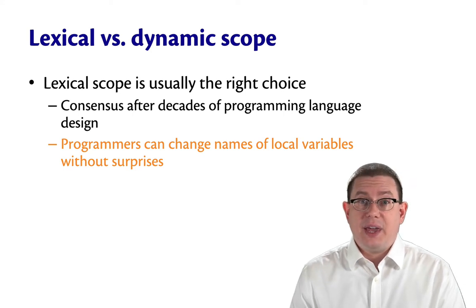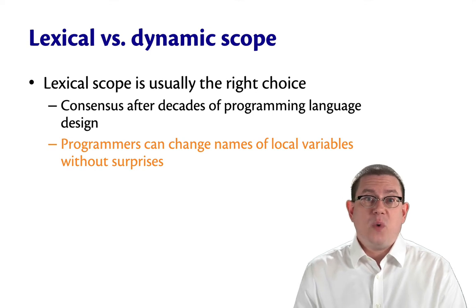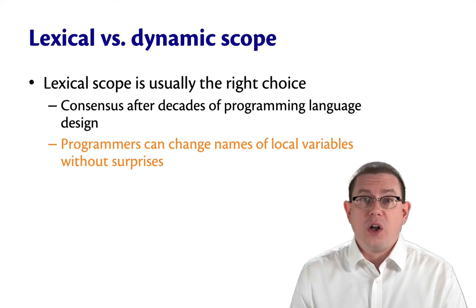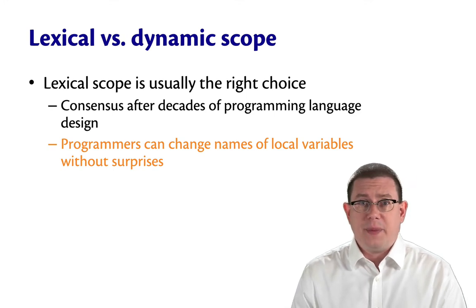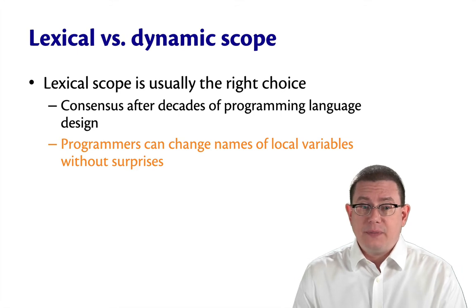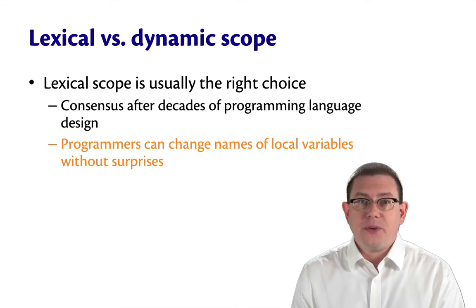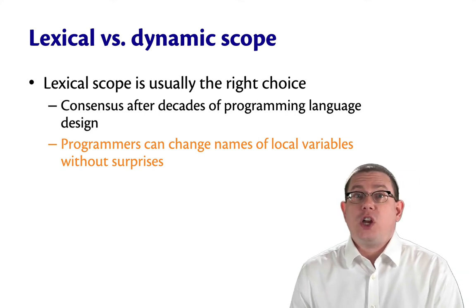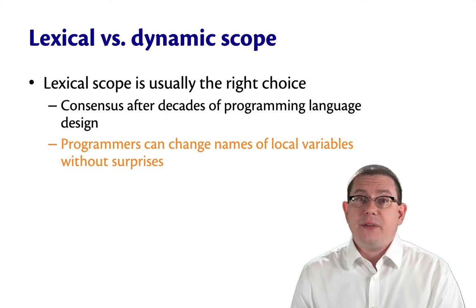We have now seen lexical and dynamic scope. Lexical scope is what you have been taught all along if you've been taking courses in Python, Java, or almost any other programming language. After decades of programming language design, the consensus is that lexical scope is the right choice. The main reason is that it doesn't lead to surprises — a programmer can change the name of a local variable without the meaning of a function changing.